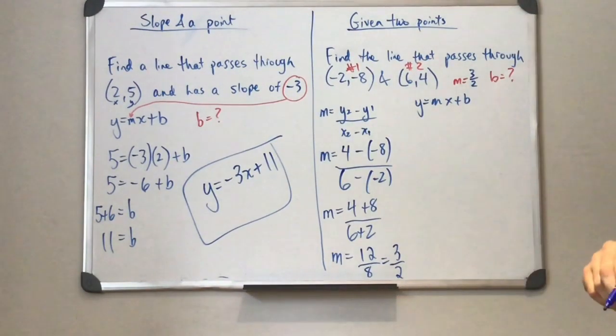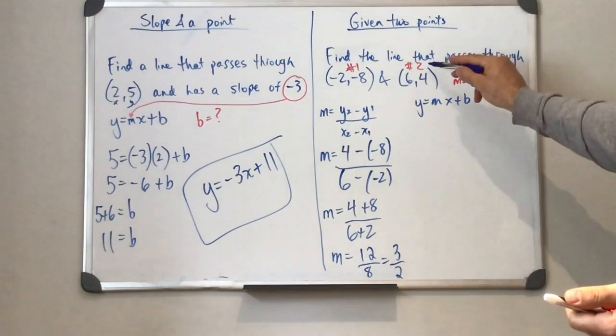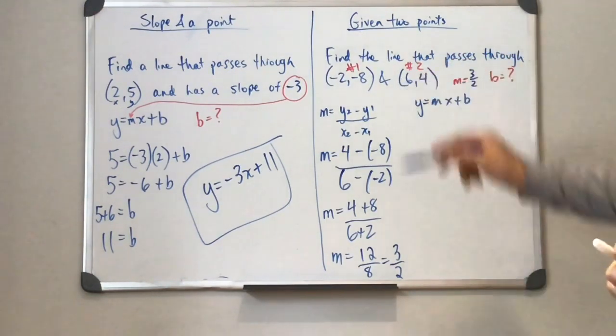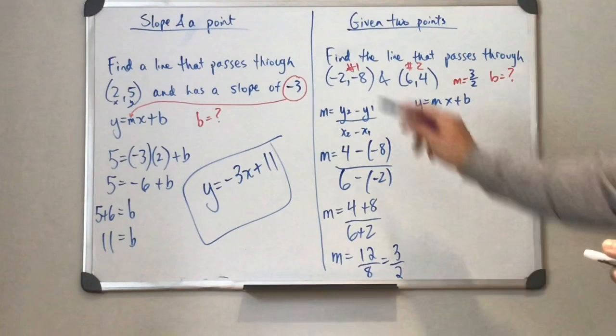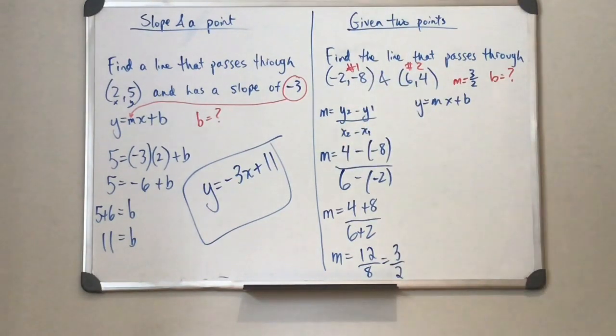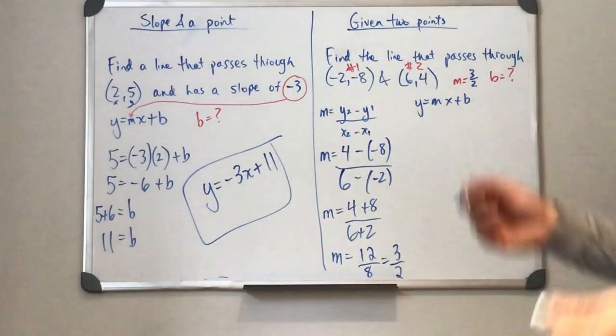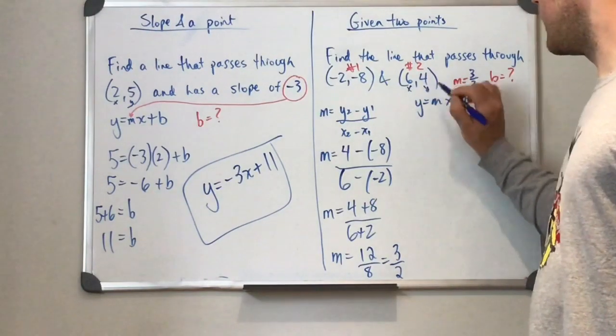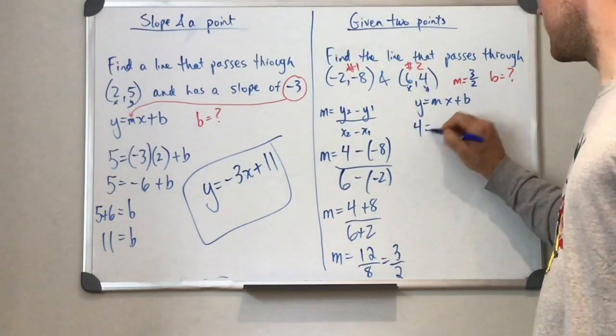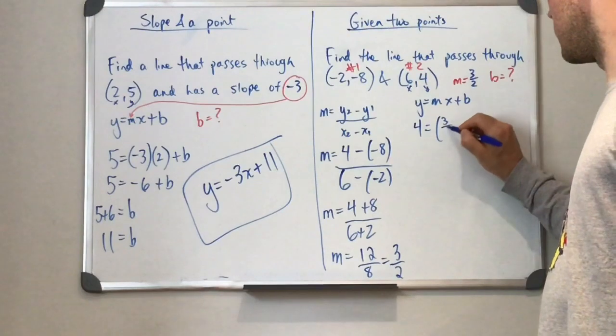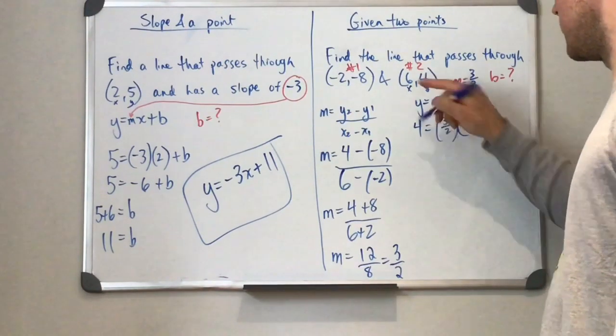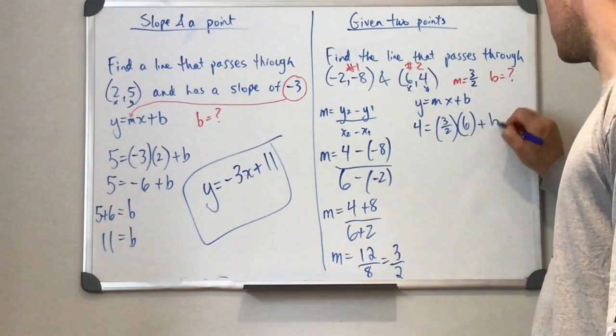So we're able to sub everything into y equals mx plus b. So we only need one of the points. You know what? I'd rather use this one because it's dealing with all positive numbers. You can use the first point if you choose. But yeah, it's up to you. So we've got our x and our y again.